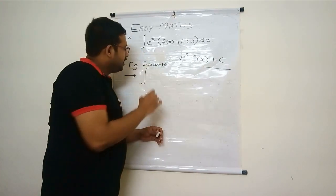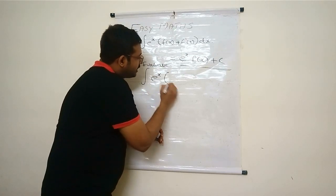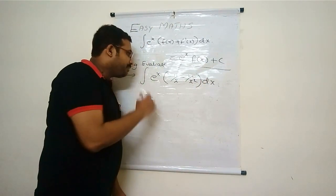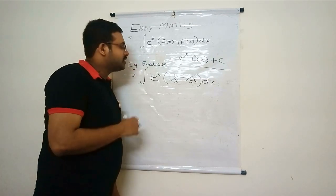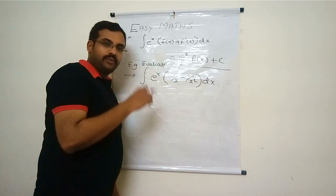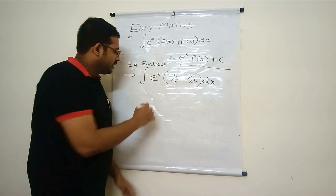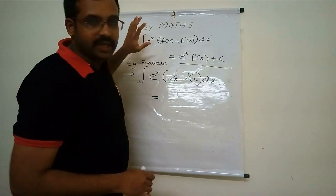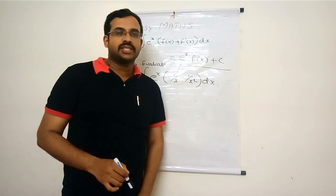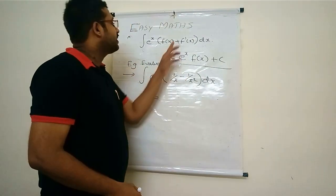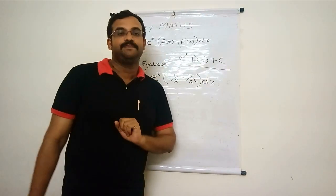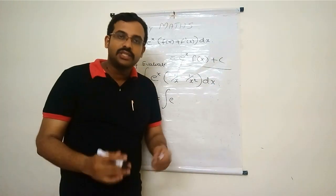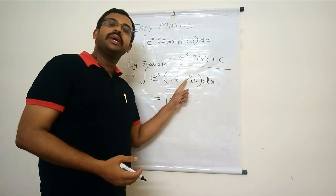Second example: evaluate ∫eˣ(1/x − 1/x²)dx. This can be expected as a one or two mark MCQ question. We need to identify the function and its derivative. The derivative of 1/x is −1/x², so that minus 1/x² term is the derivative. Don't worry about the minus sign — we can rewrite accordingly.